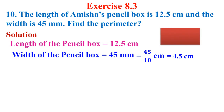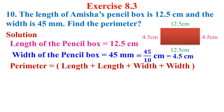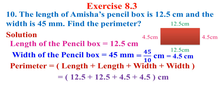Now draw the pencil box. The length is 12.5 cm and width is 4.5 cm. Perimeter equals length plus length plus width plus width. Applying the values: 12.5 plus 12.5 plus 4.5 plus 4.5 cm. Adding these gives 34.0, so the perimeter is 34 cm.